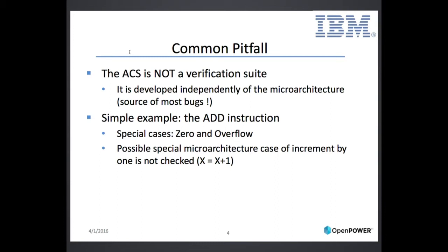We are not taking into account the microarchitecture, which is of course the source of most bugs. A very simple example: a compliance suite should cover the special case of zero and overflow for an add instruction because they are described and defined in the architecture. But if a designer decided to do something very special for an increment plus one, then maybe there is a bug there, but the compliance suite is not going to go in that direction. You can think about out-of-order execution, which is certainly a source of many bugs — we don't cover that.